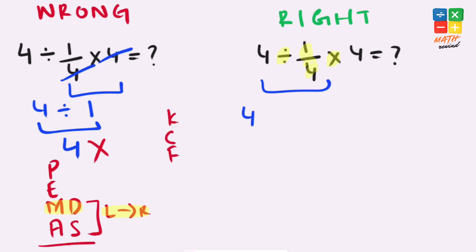C means we change division to multiplication, and F means we flip 1 over 4 as 4 over 1. We don't need to write 4 over 1, we can write it as 4, and times 4.